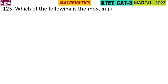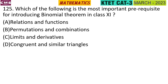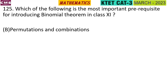Question 5: Which of the following is the most important prerequisite for introducing the binomial theorem in class 11? The options are: relations and functions; permutation and combination; limits and derivatives; congruent and similar triangles. The answer is Option B: permutations and combinations.